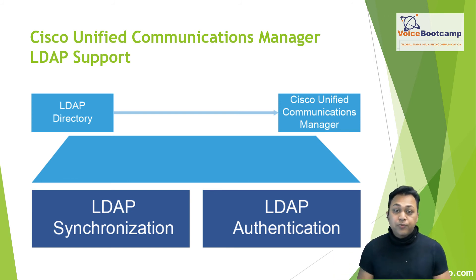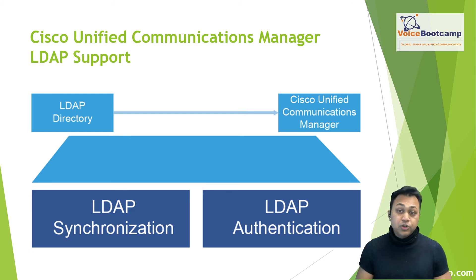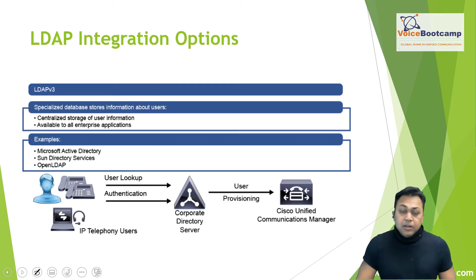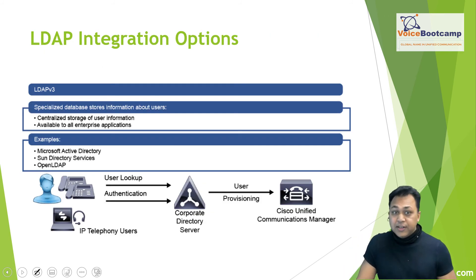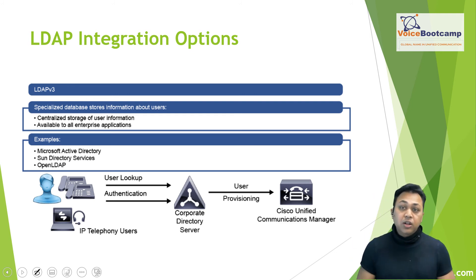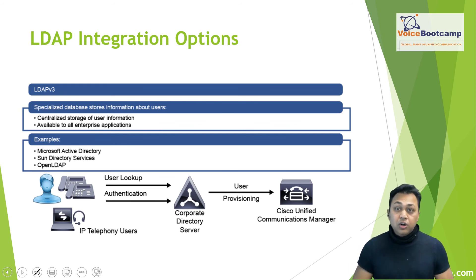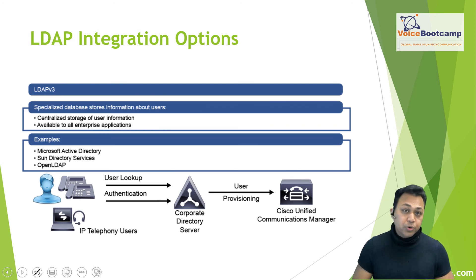Call Manager currently supports the following types of LDAP servers: Microsoft Active Directory, Sun Directory Services, and OpenLDAP — and it must be version three or support version three. There are two LDAP integration options available: synchronization and authentication. Synchronization is a process using an internal tool called Cisco Directory Synchronization, or DirSync, that synchronizes several user attributes manually or periodically from your Active Directory or corporate directory.